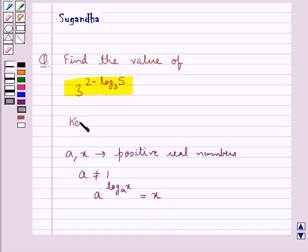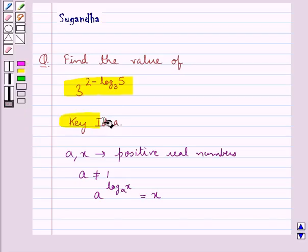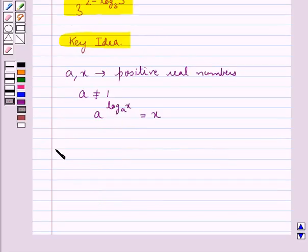This is the key idea that we use for this question. Let's proceed with the solution now. We are supposed to find the value of 3 to the power 2 minus log of 5 to the base 3.